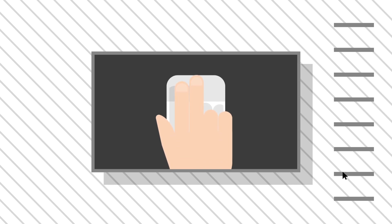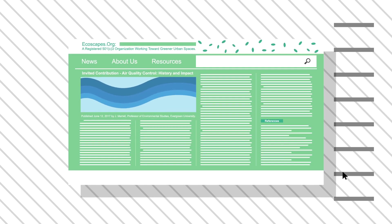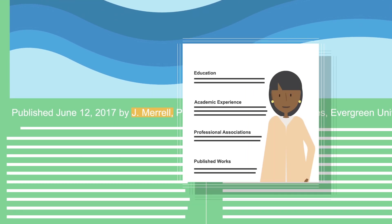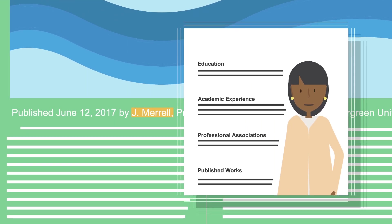Since anyone can publish information online, it's important to know whether or not a source is authoritative. To be an authority on a subject, an author must be accepted as an expert by professionals in his or her field. For example, an article in an academic journal is likely to be more authoritative than a personal blog post.